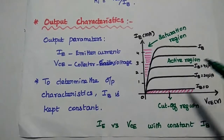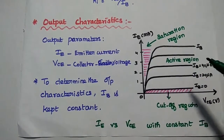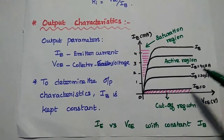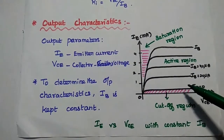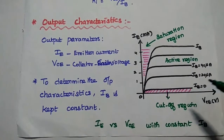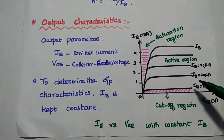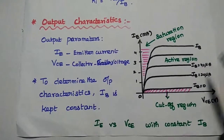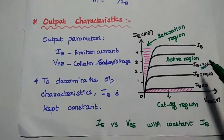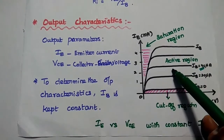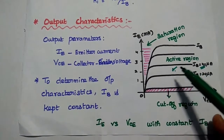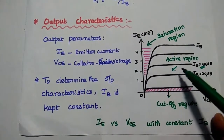In the active region, the input side is forward biased and the output side is reverse biased — that is, base-collector is forward biased and emitter-collector is reverse biased. In this condition, we get maximum current conduction, and the transistor is in the on condition, working for the maximum output.